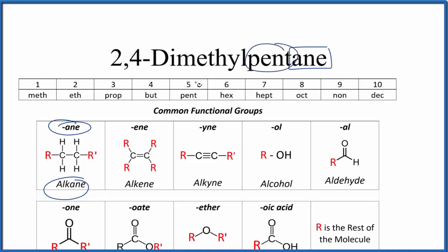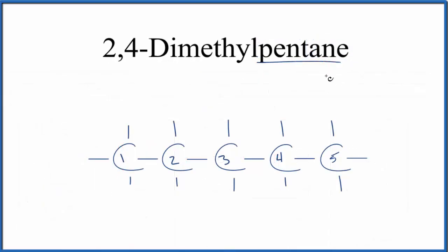The pent, that means we'll have five carbon atoms. So we'll have a chain of five carbon atoms. Let's put them up and number them one through five. So this is just pentane.